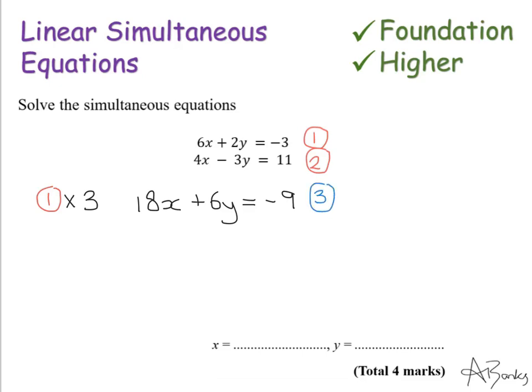Now there's equation 2. To make that 3y into a 6y I'm going to times it by 2. So times in everything in that equation by 2 gives me 8x minus 6y equals 22. I'm going to call this equation 4.